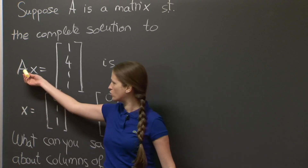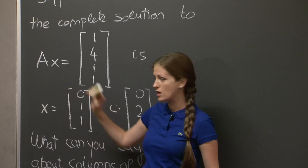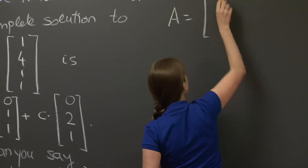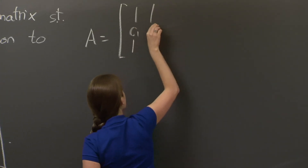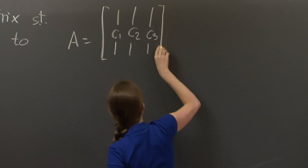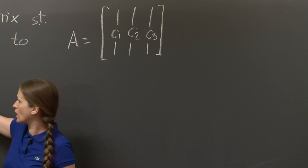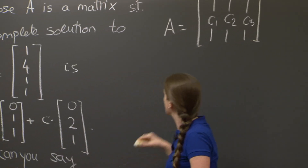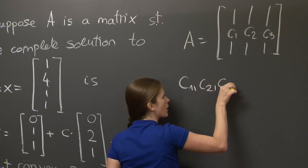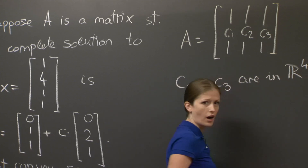We want to multiply A with an x that has three entries, so A should have three columns. Let me call those columns C1, C2, and C3. When I take some linear combination of C1, C2, and C3, I'm going to get the vector 1, 4, 1, 1. So all the columns C1, C2, and C3 are vectors in R4.